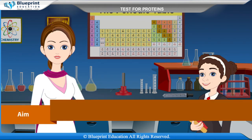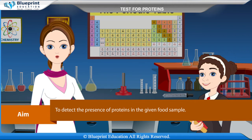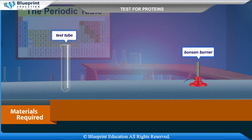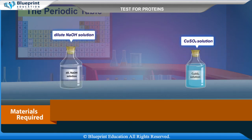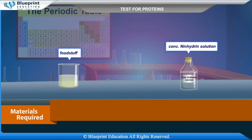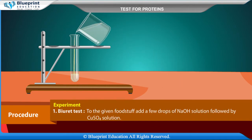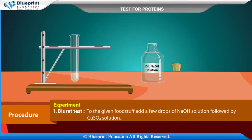Our aim here is to detect the presence of proteins in the given food sample. Materials required are: test tube, Bunsen burner, dilute NaOH solution, CuSO4 solution, foodstuff, and concentrated ninhydrin solution.